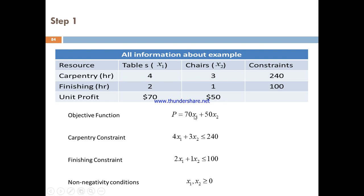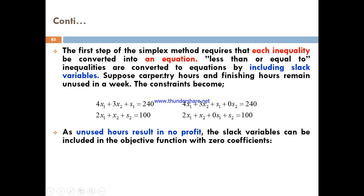We construct the initial tableau: two resources—carpentry and finishing time—with unit profit. X1 represents tables and X2 represents chairs, with constraints 240 and 100. The objective function is P equals 70x1 plus 50x2. The carpentry constraint is 4x1 plus 3x2 less than or equal to 240, and the finishing time constraint is 2x1 plus x2 less than or equal to 100.